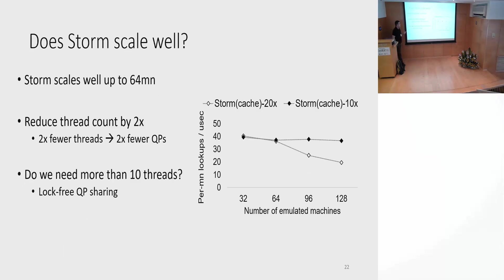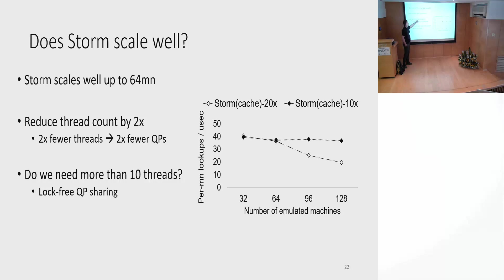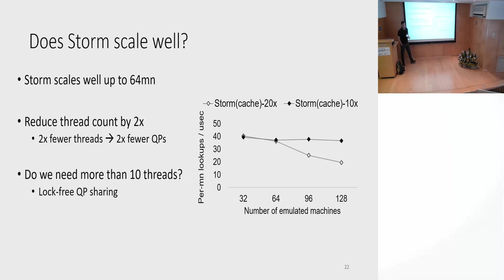Does STORM scale well? It can scale up to 64 machines. If you go beyond 64 machines, throughput will drop but you still get significant throughput. If you are okay with halving the number of threads to 10 threads per machine, you can go up to 128 machines and it will be fine. If you really need more than 10 threads, then you should think about lock-free QP sharing.